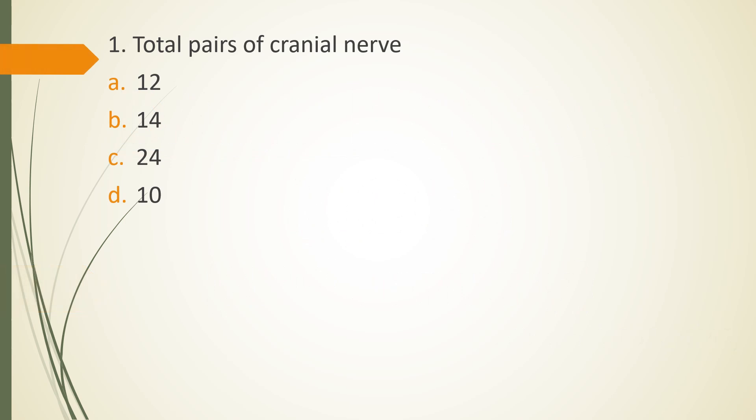Question 1. Total pair of cranial nerves is 12, 14, 24 or 10. The correct answer is option A that is there are 12 pairs of cranial nerves in humans.